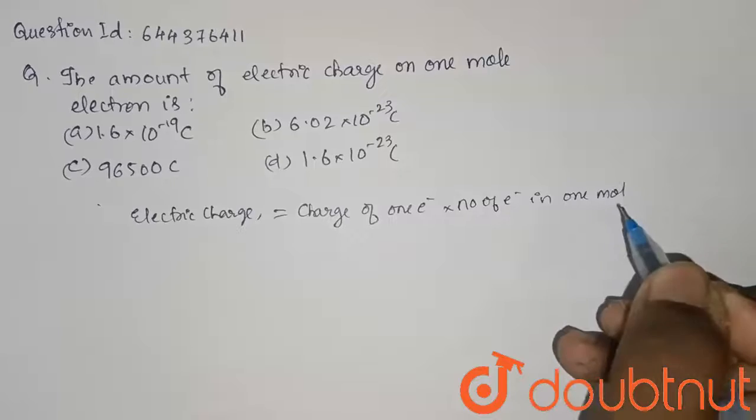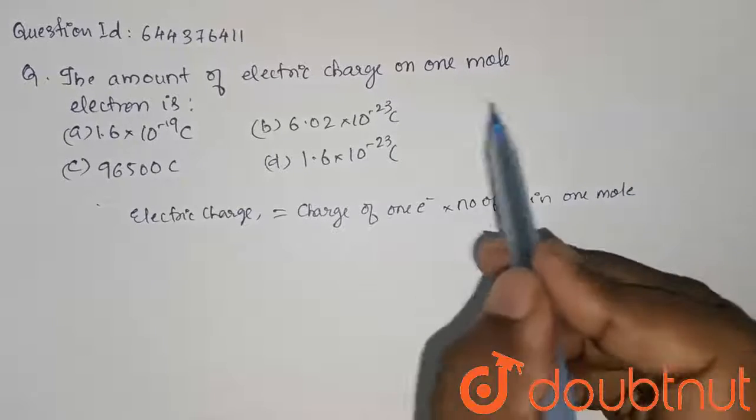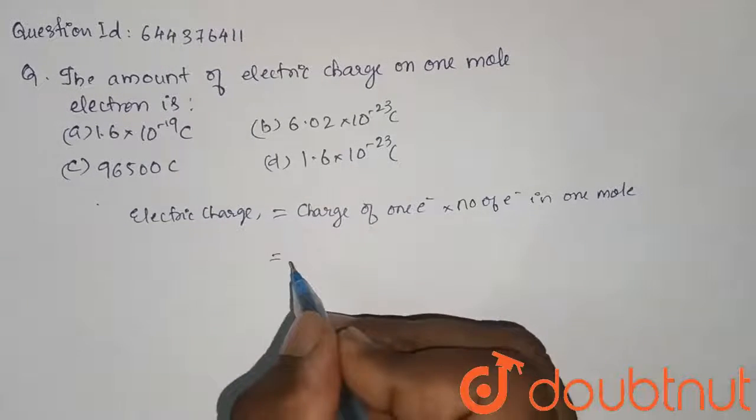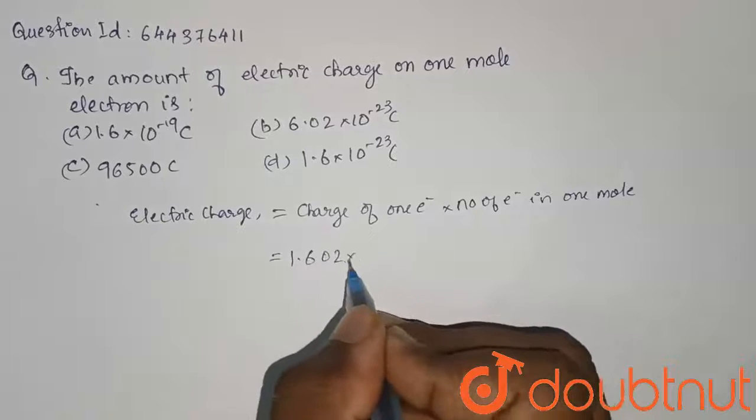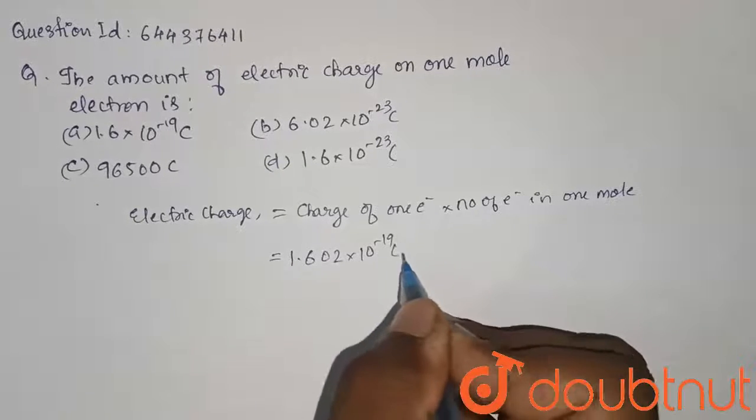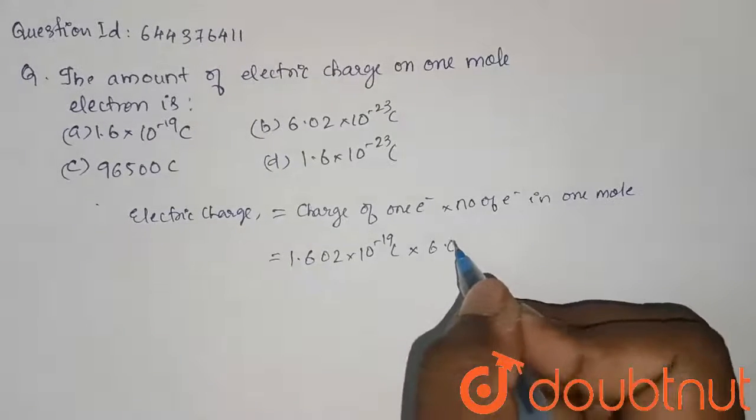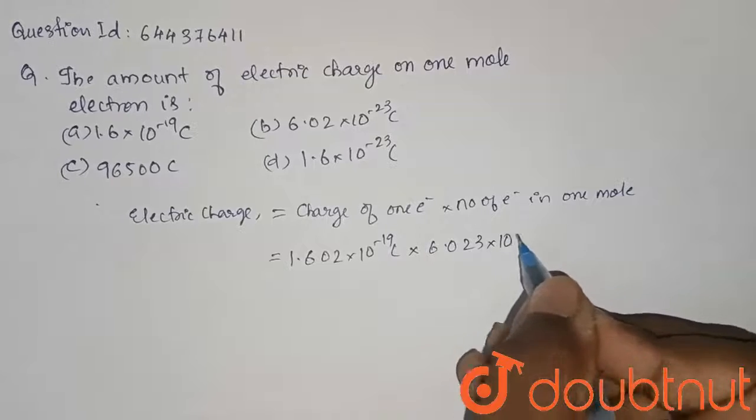It is asked about the electric charge on one mole of electrons, which is equal to, as we know, charge of one electron is 1.602 into 10 power minus 19 coulombs multiplied by 6.023 into 10 power 23 electrons.